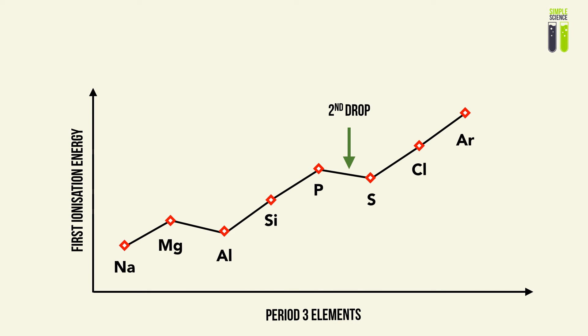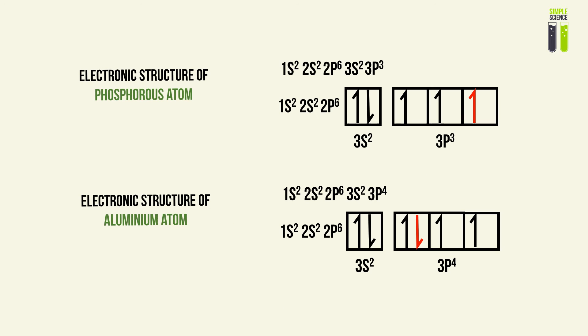Now let's look at the second drop. Why is the first ionization energy of sulfur lower than that of phosphorus? Again, we look at their electronic structures.